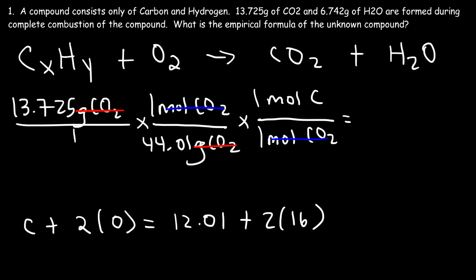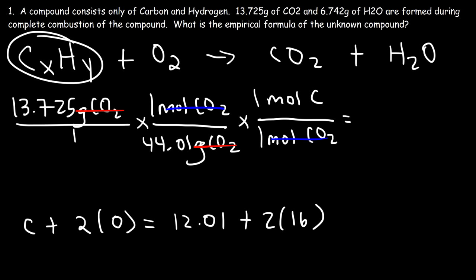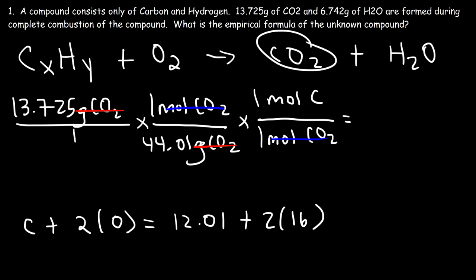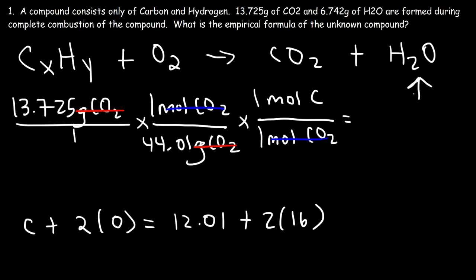Keep in mind all the carbon atoms found in CO2 come from this compound. So the moles of carbon in CO2 is equal to the moles of carbon in the compound. The same is true for hydrogen — all the hydrogen atoms come from this compound, so the moles of hydrogen in water equals the moles of hydrogen in the unknown compound. Calculating: 13.725 divided by 44.01 gives 0.3119 moles of carbon.